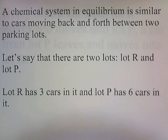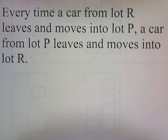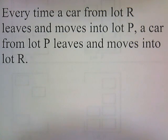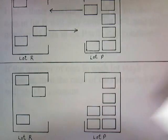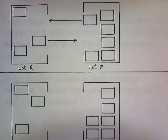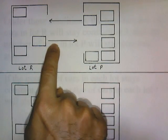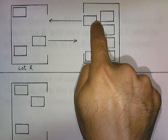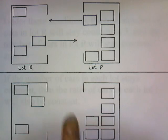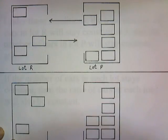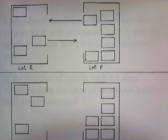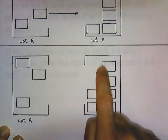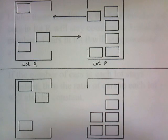A chemical system in equilibrium is similar to cars moving back and forth between two parking lots. Let's say there are two lots, lot R and lot P. Lot R has three cars and lot P has six cars. Every time a car from lot R moves into lot P, a car from lot P moves into lot R at the exact same time. So we have a system in equilibrium — the forward rate equals the rate of the reverse. After the cars exchange, there are still three cars in lot R and six in lot P. There's been no change in the number of cars; it's in equilibrium.